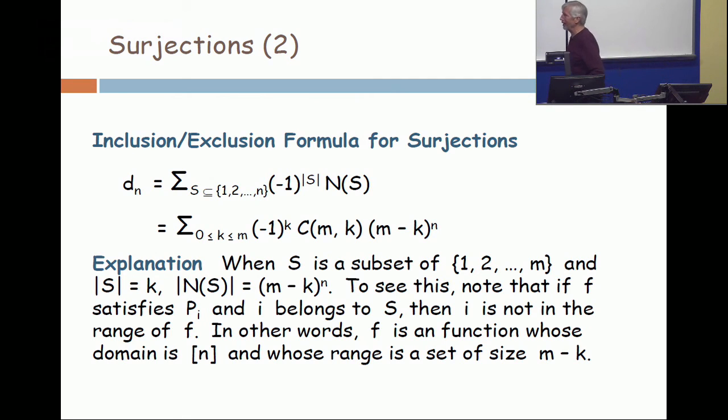If we had gone from m to n, there would have been n properties. Alright, so what is the property? You have functions from the n element set to the m element set. That's your universe. And what are your properties?